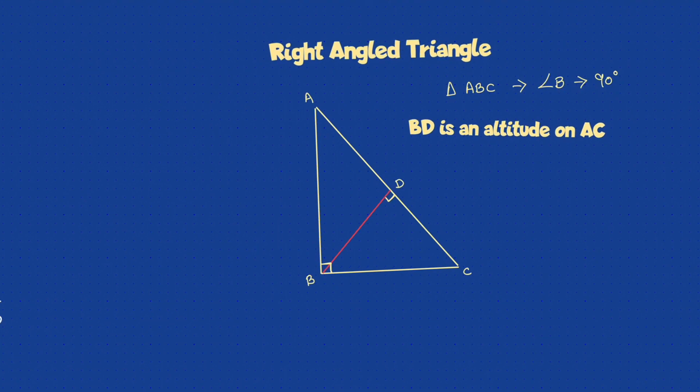BD is an altitude to AC. Now remember, what is an altitude? Altitude is just a perpendicular drawn onto the opposite side. It's just a plane perpendicular which is drawn onto the opposite side. It's not a perpendicular bisector.